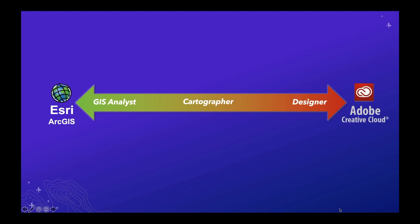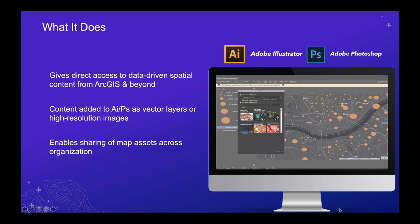There are also cartographers who sit in the middle — they may use Esri software to get authoritative data out of their organization's GIS, but really they want to bring it into Creative Cloud applications and work with it there where they're more comfortable. The extension gives you direct access to data-driven spatial content from ArcGIS and beyond, with other file-based data types also supported.